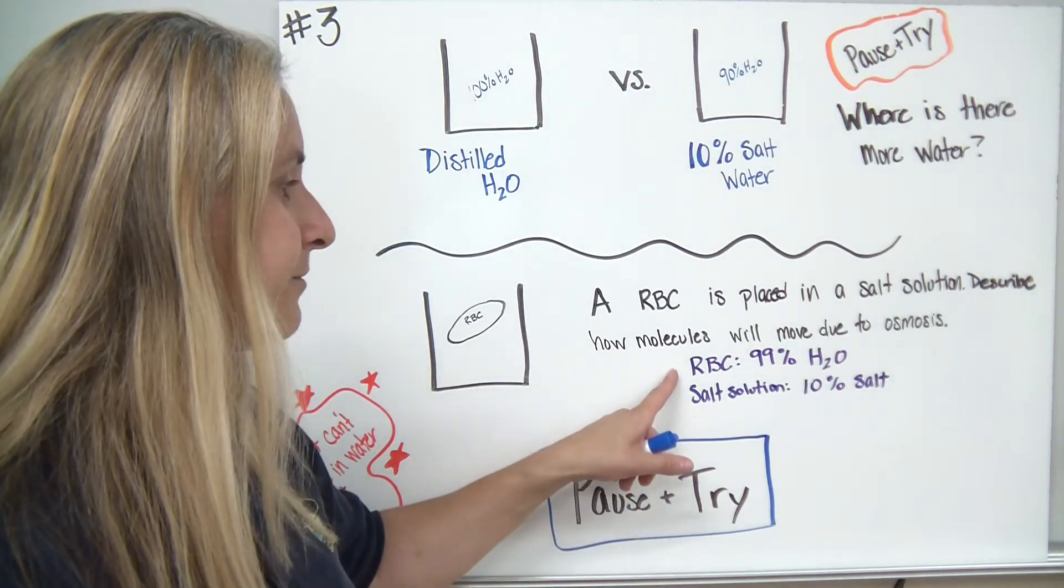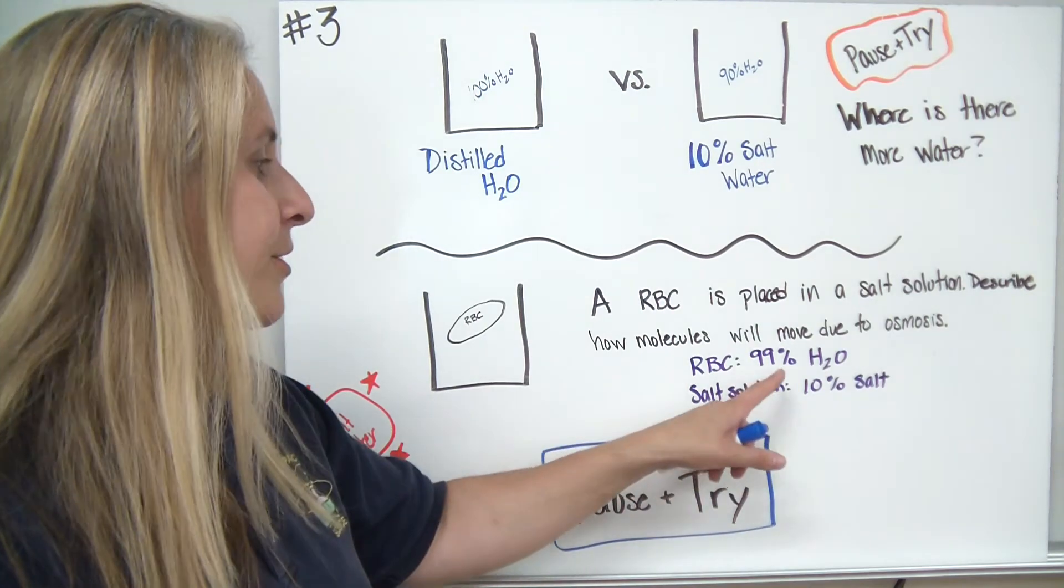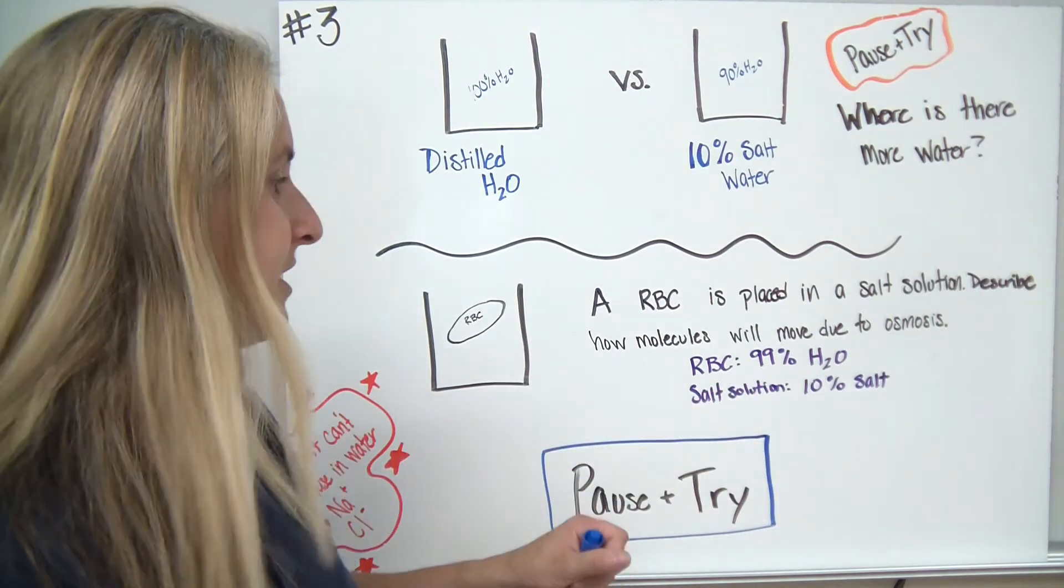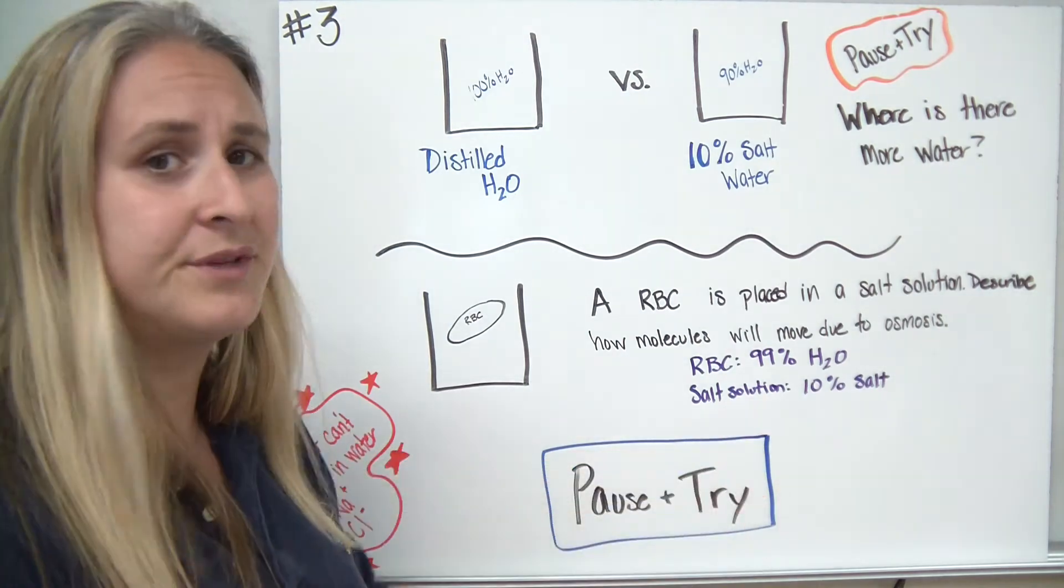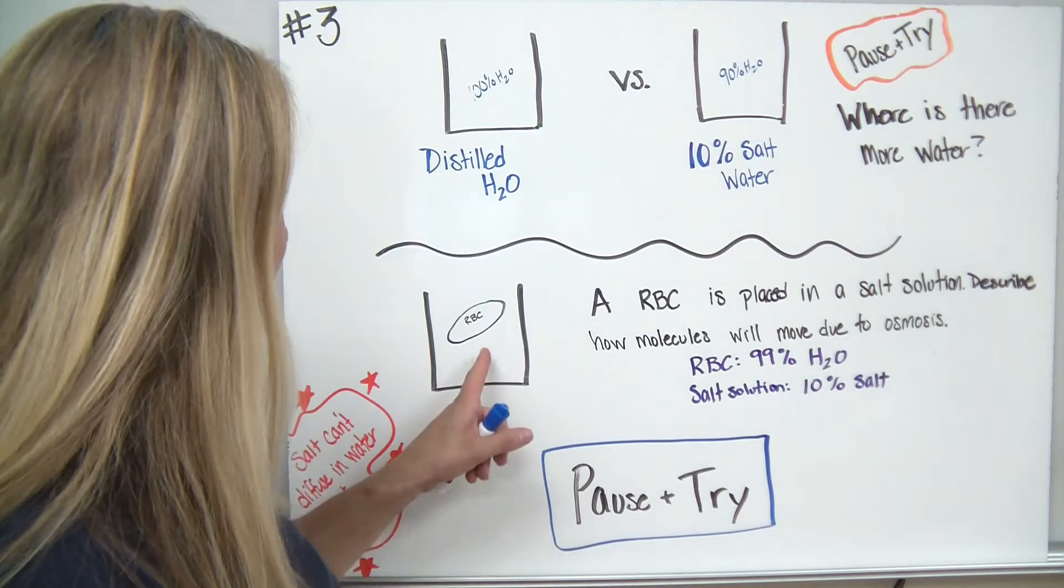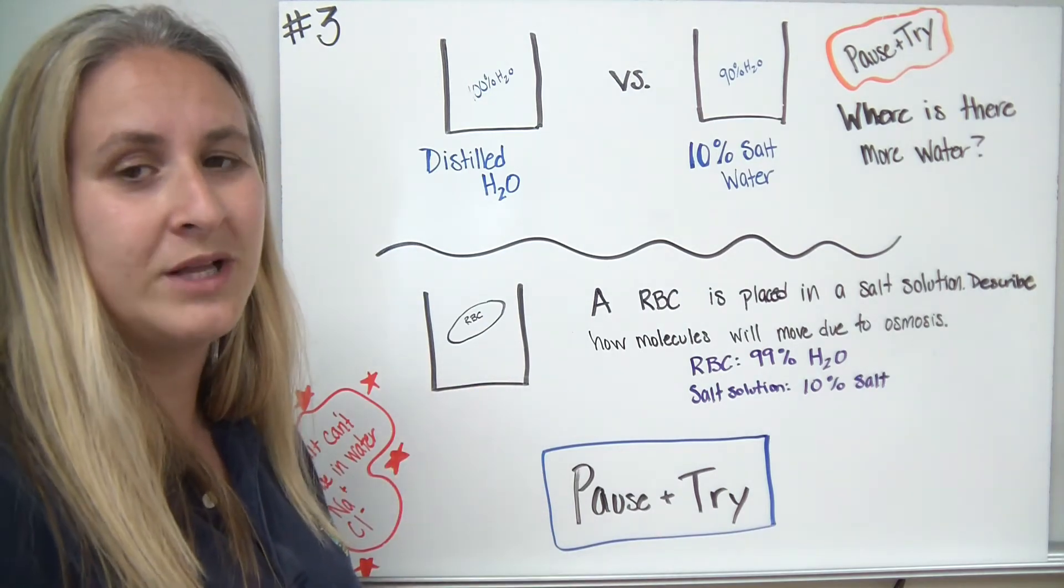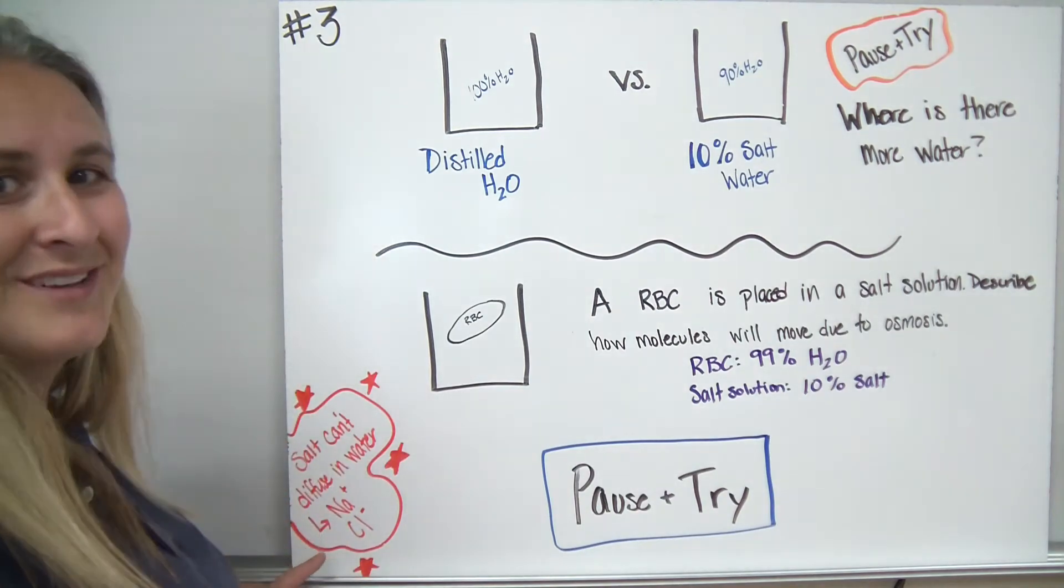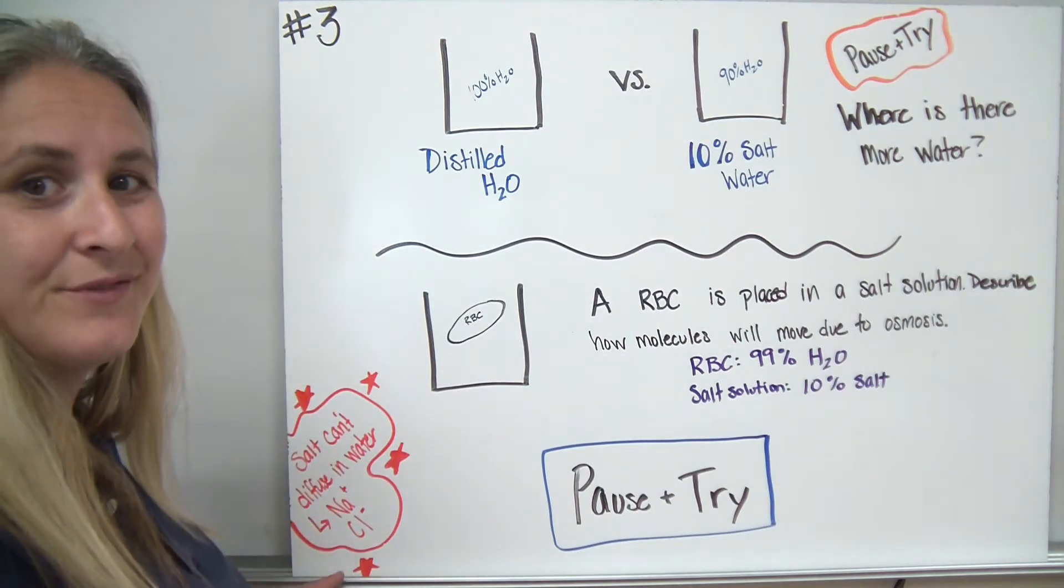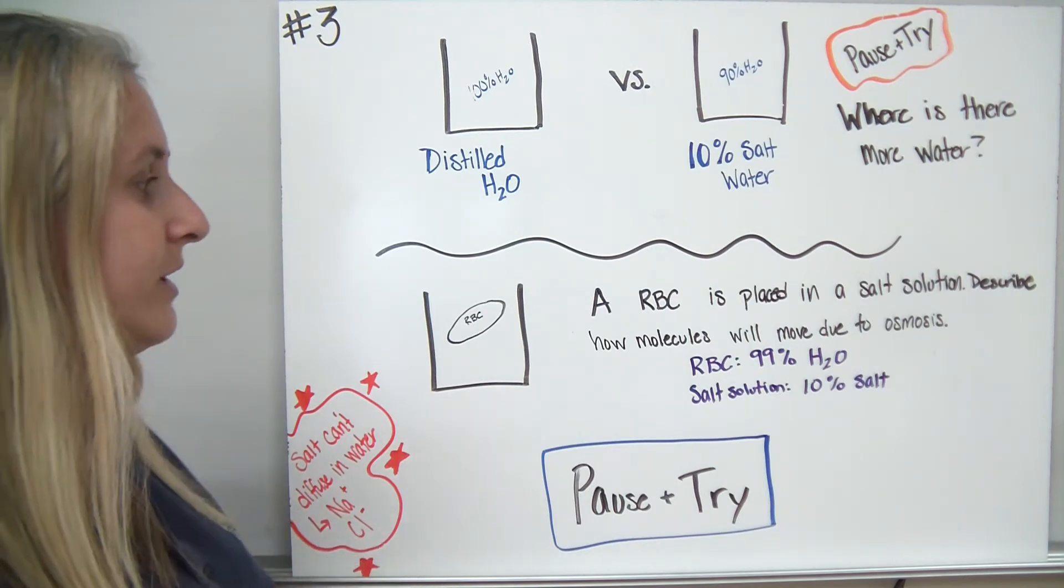Describe how the molecules will move based on osmosis. If you remember back, most of our body cells, including our red blood cells, are approximately 99% water. If we put them into a salt solution that has a 10% salt concentration, try to figure out and describe which way would the water molecules move. And remember, salt cannot diffuse. Salt breaks down into ions or charged molecules.